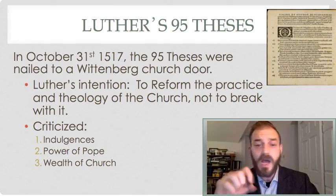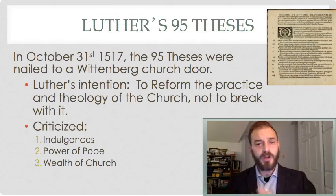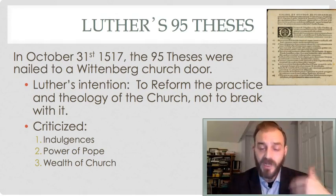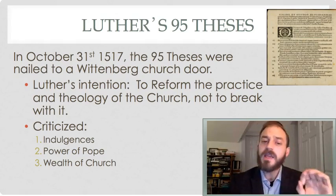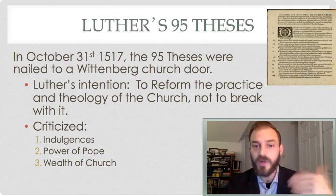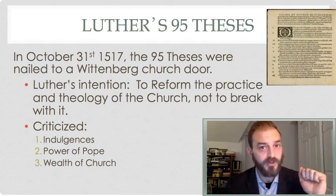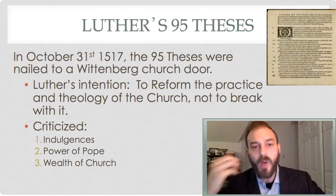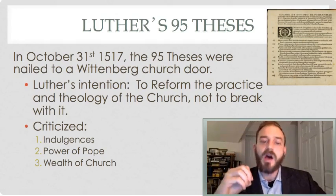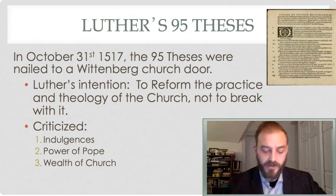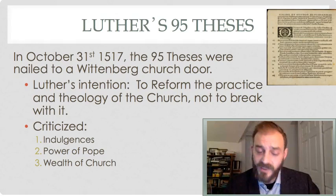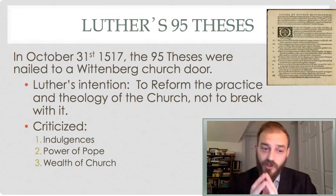Luther's intention here was not to break away from the church but to demonstrate through public argumentation the falsehood of indulgences and to reform the church's practices. But in doing so, he also criticized the power of the Pope to issue indulgences. If indulgences are wrong, Pope Leo is wrong to be building St. Peter's Basilica through their proceeds. That led Luther also to reject the wealth of the church — the church was meant to be for the poor, caring for the needy, the sick, the widow, and the orphan — whereas the Renaissance popes had been creating palaces for themselves and living luxuriously.